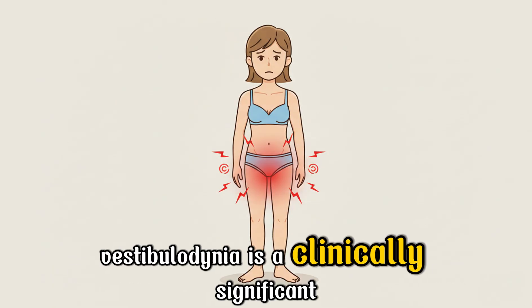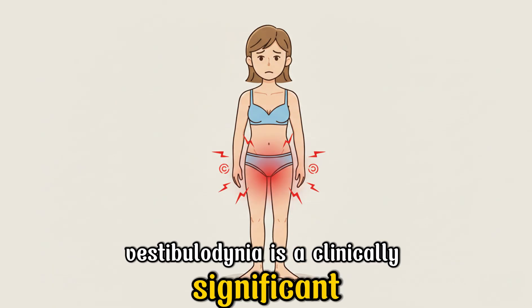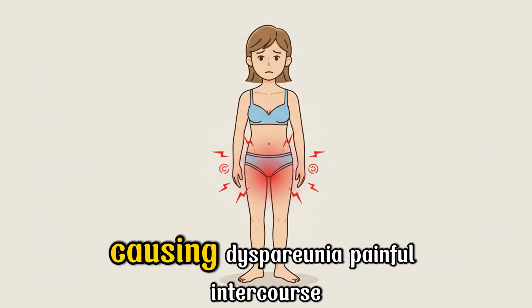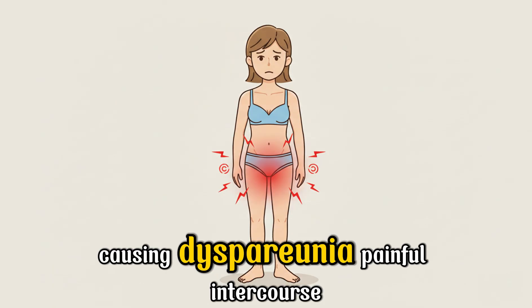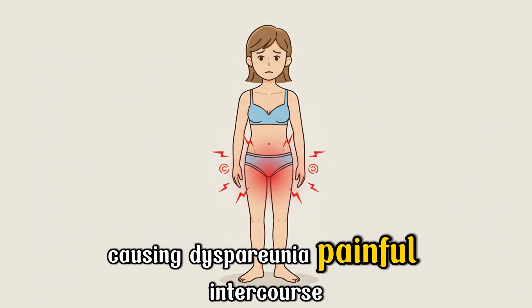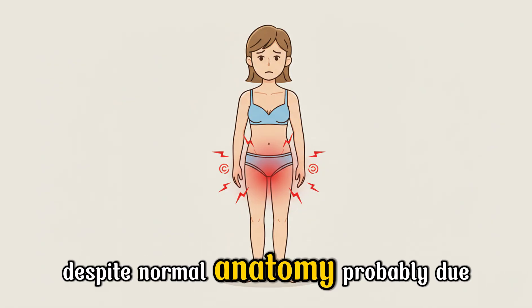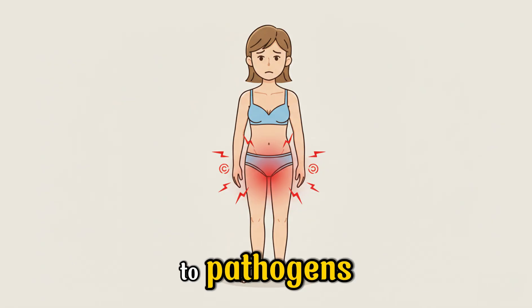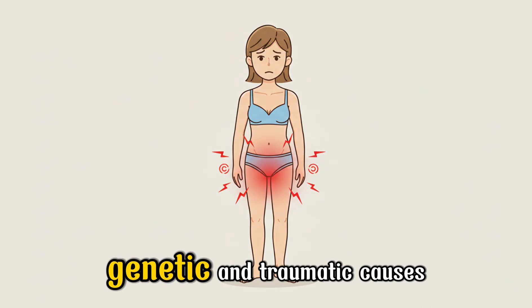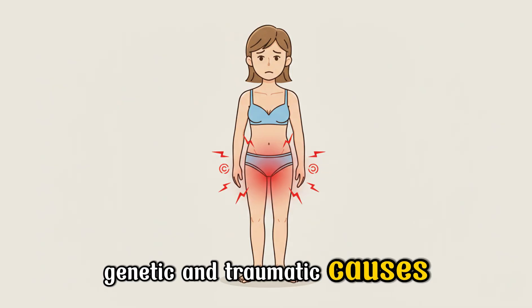Vestibulodynia is a clinically significant condition causing dyspareunia — painful intercourse — despite normal anatomy, probably due to pathogenic, genetic, and traumatic causes.